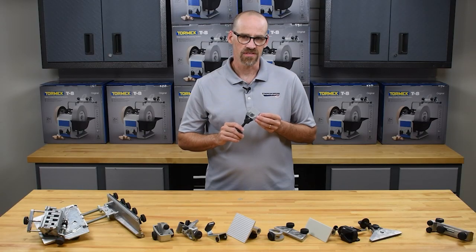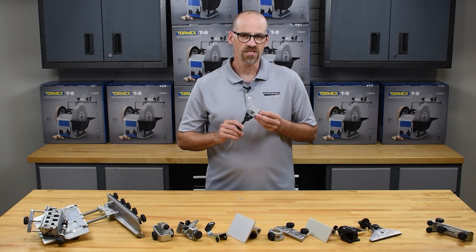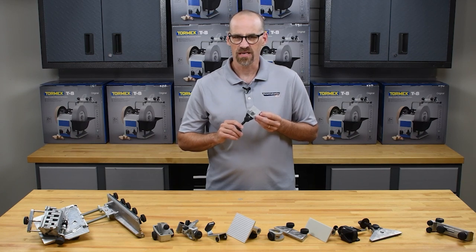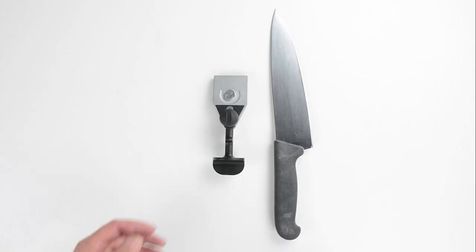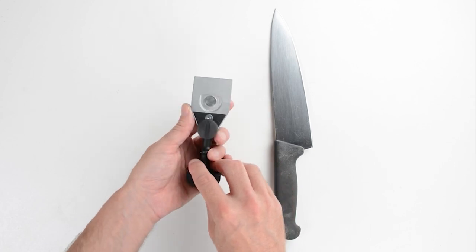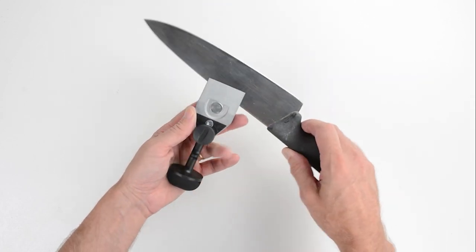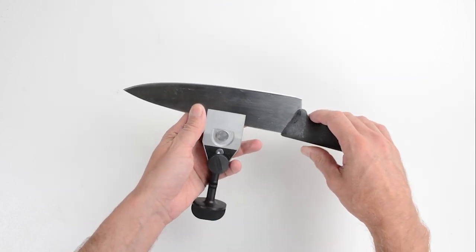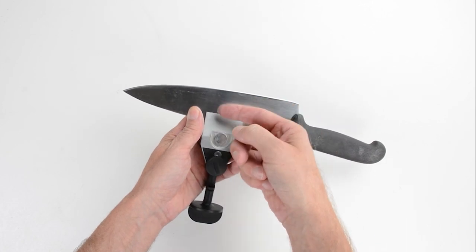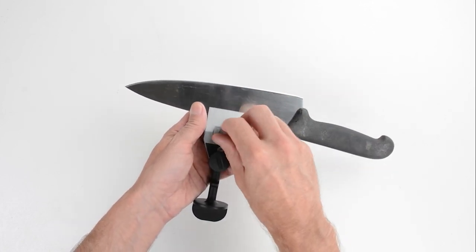The KJ45 knife jig will handle the majority of kitchen knives, outdoor hunting, and pocket knives. Insert the knife into the clamp. The distance from the clamp to the knife edge is the same on both sides of the clamp. Tighten the screws to hold the knife firmly.